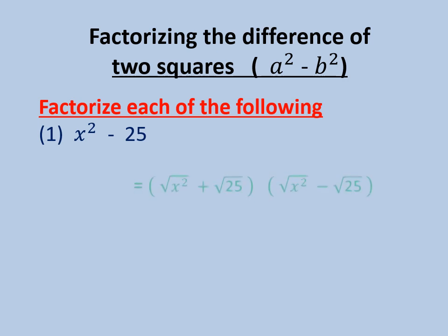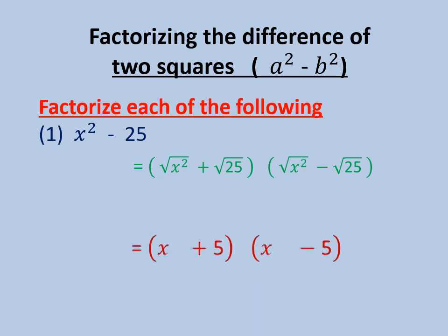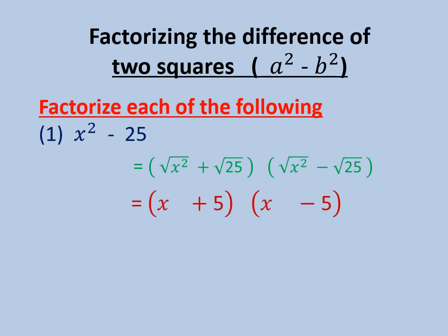We will make two brackets and put: root of the first plus root of the second, times root of the first minus root of the second. So the factorization will be (x + 5)(x - 5). Number 2: x² minus 9y².